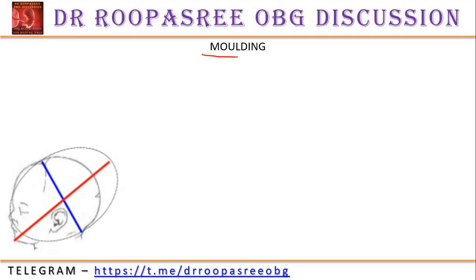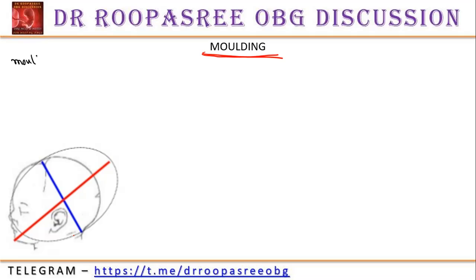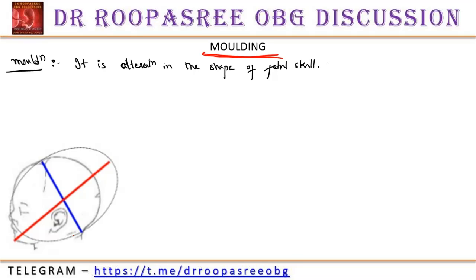What is molding? Why does molding happen? Let's define molding. It is alteration in the shape of the fetal head while passing through the resistant birth canal. It is alteration in the shape of the fetal skull while passing through the resistant birth canal.